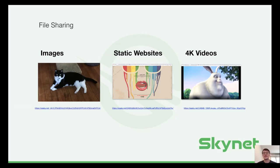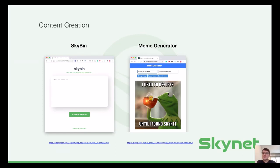When we first released Skynet, people immediately started sharing all kinds of static content — for example, pictures, simple websites, and also videos. Skynet is super fast and also streams 4K videos without problems. A bit later, people started using our SDK to create actual SCAPs that produce content themselves. Two of the more popular examples are SkyBin, which is a pastebin clone where you paste some text and get a Skylink to it, and the meme generator, where you choose an already-uploaded picture or upload your own and add text to create a meme — then you also get a Skylink to the meme which you can share.